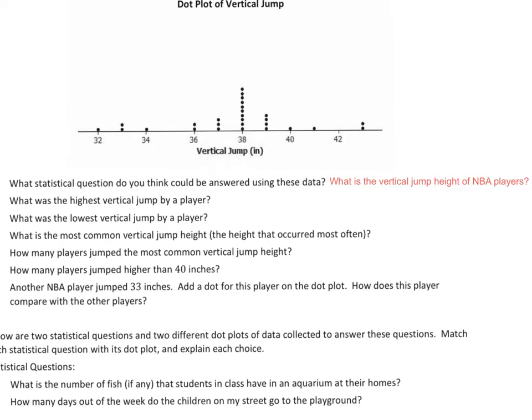B says, what was the highest vertical jump by a player? So we have to look on the chart, and we see that vertical jump in inches. So we're going to go all the way to the right, and we can't say 42. What we do is we look for where there's a dot all the way to the right, and we have two of them jumping right there. So in order to figure out what that height is, we have to see what we're counting by. And it looks like we're labeling every two inches, but we're actually going by ones. So that's going to be 43 inches.